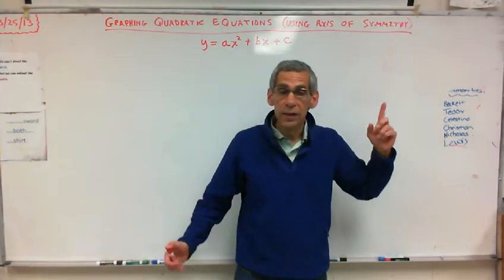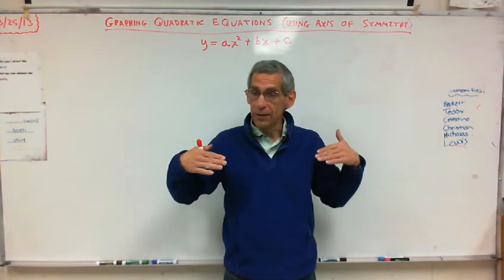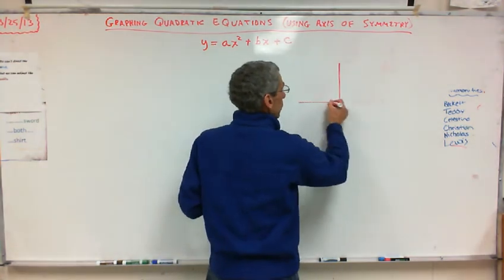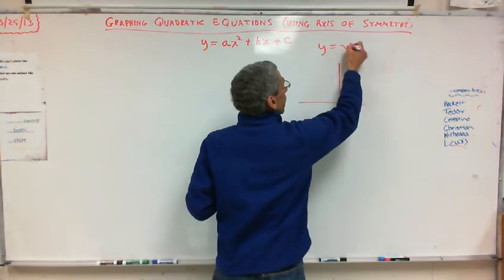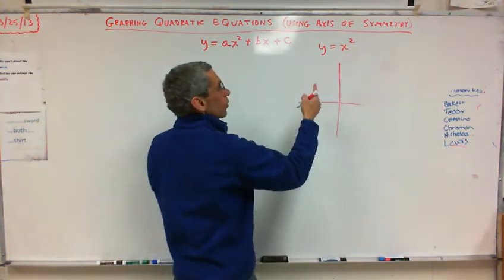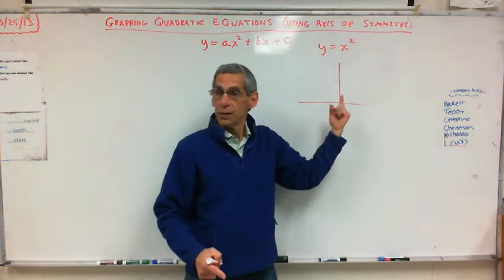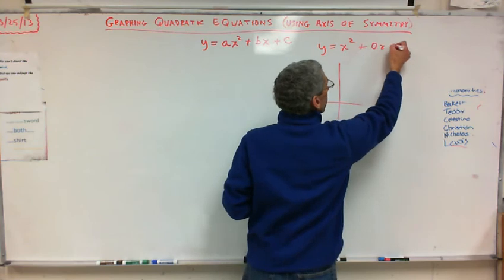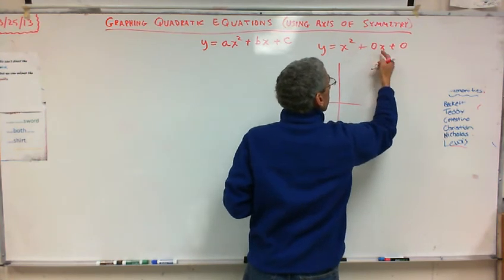And for those, they all have an axis of symmetry. You'll notice when you graphed y is equal to x squared, well there's no c. Well actually c is zero. This is what you have, zero x plus zero. So your b is zero.